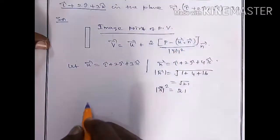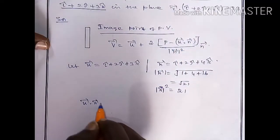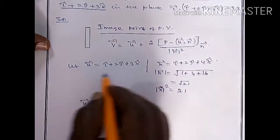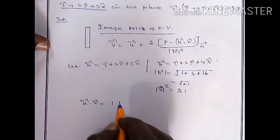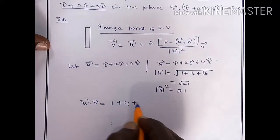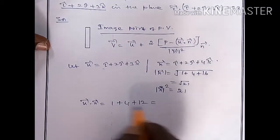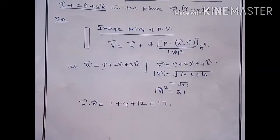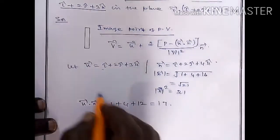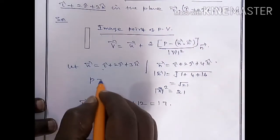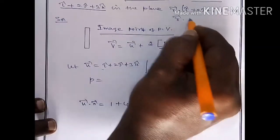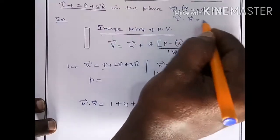Now, the value of u dot n vector: multiply the same vector components — 1 times 1 plus 2 times 2 plus 3 times 4 — which gives 1 plus 4 plus 12, equal to 16. So p value from the plane equation r vector dot n vector equal to p gives p equal to 38.